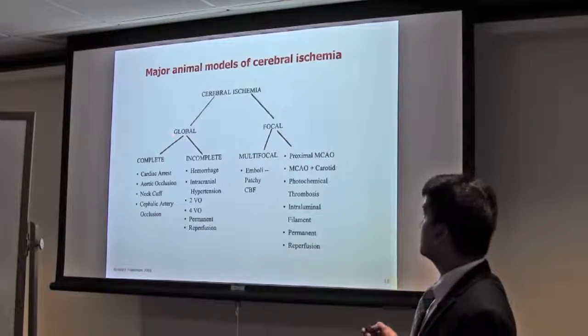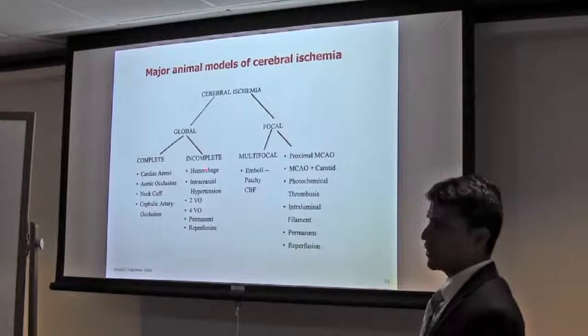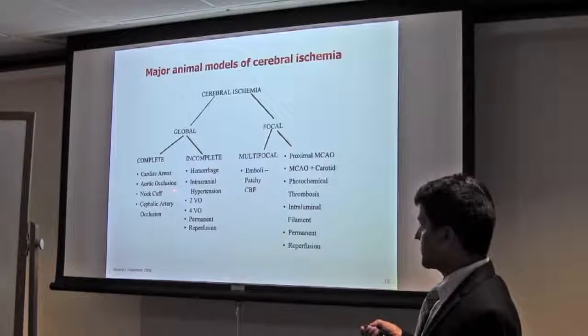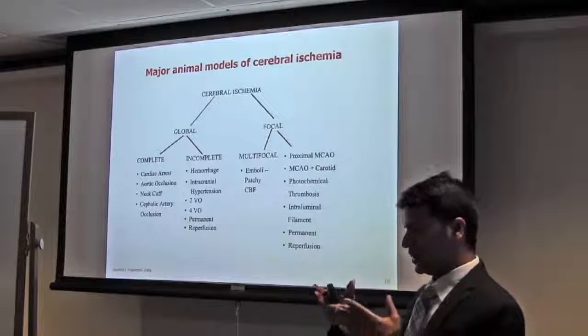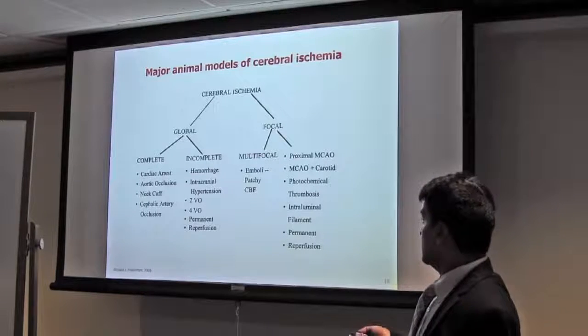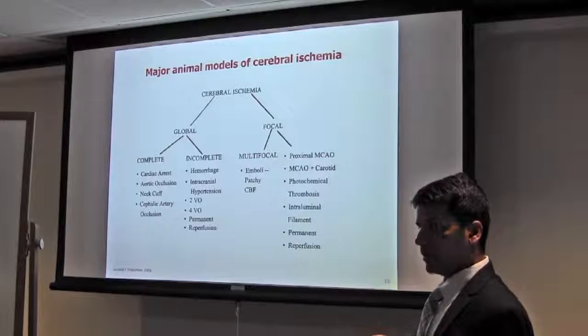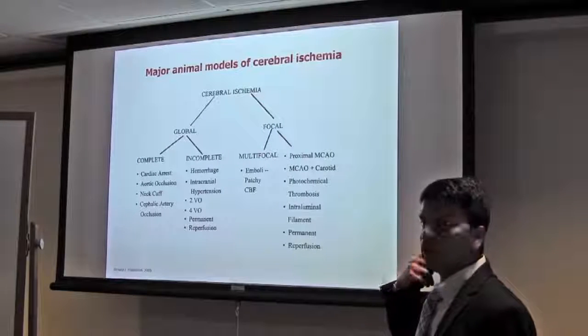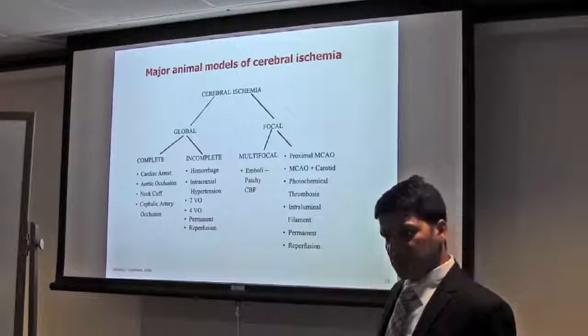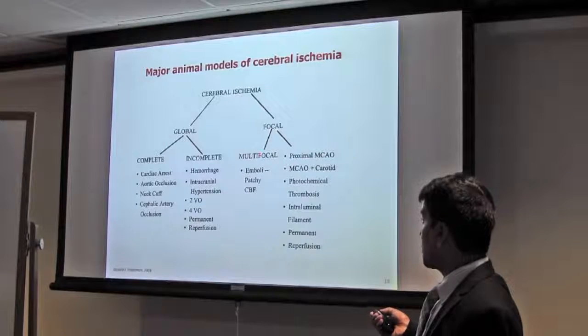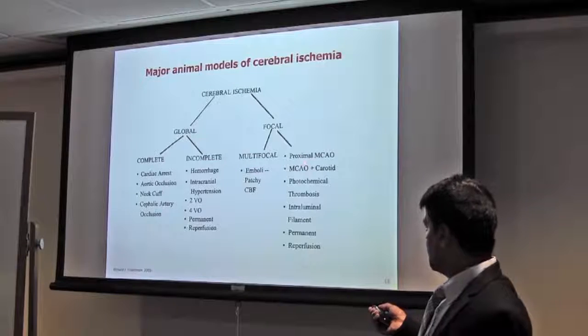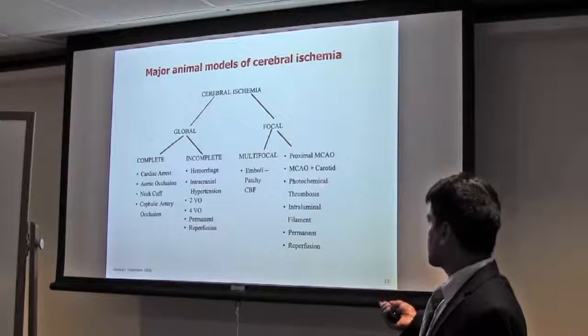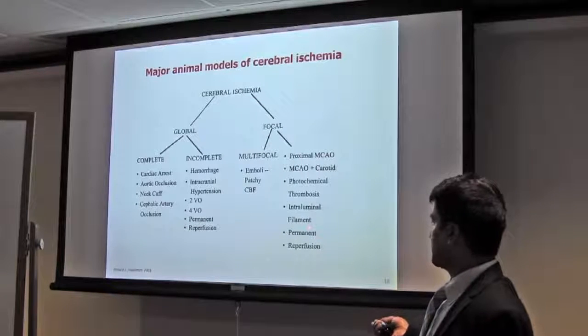There are mainly two major kinds of cerebral ischemia animal models: global and focal. Complete global ischemia occurs when cardiac arrest occurs, or aortic occlusion occurs, or sometimes when people drown in water. Incomplete ischemia occurs when hemorrhagic stroke happens, or we can model by two vessel occlusion - like two carotid artery occlusion, or four vessel (two carotid artery and vertebral artery occlusion). It can be permanent or transient. In case of focal ischemia, that can be multifocal using emboli or thrombus. Mainly it can be focal ischemia using MCAO (occlusion of middle cerebral artery), or anterior cerebral artery, or photochemical, or intraluminal filament. Also, it can be permanent or transient.